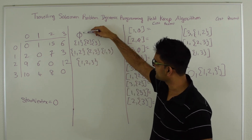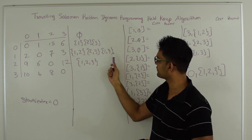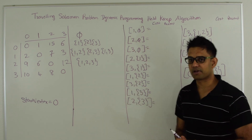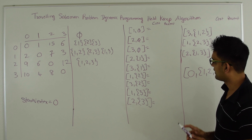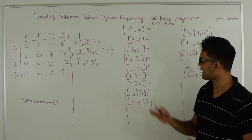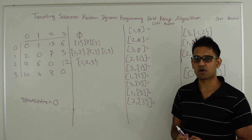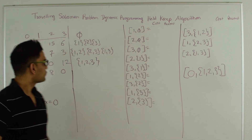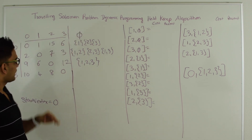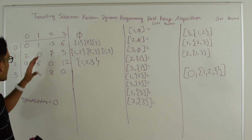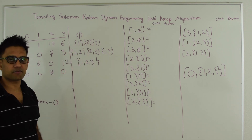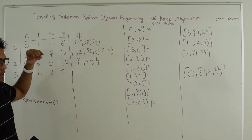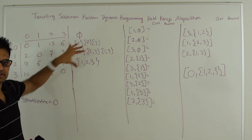The possible subsets would be: empty set, {1}, {2}, {3}, {1,2}, {2,3}, {1,3}, and {1,2,3}. After generating these, we are going to fill up some information in a table. The idea is to pick one subset at a time, go through every vertex in the graph except the start vertex and the vertices in that subset, and find the minimum cost to reach that vertex from the start vertex going through all the vertices in the subset.